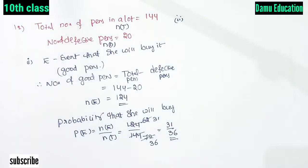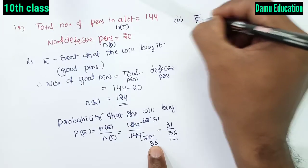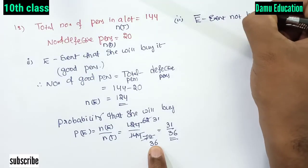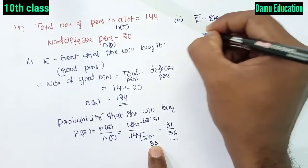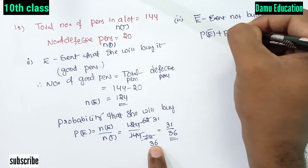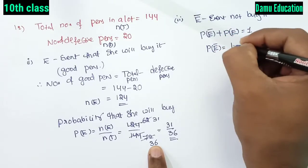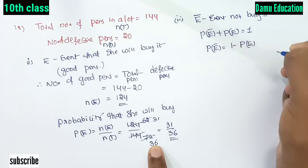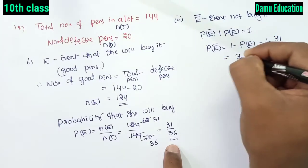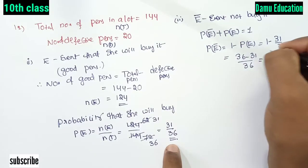She will not buy it. Let's take P(E not). The probability of not buying: probability of E-not plus probability of buying equals 1. So probability that she will not buy is 1 minus P(E) equals 1 minus 31 by 36. Taking LCM: 36 minus 31 by 36 — we get 5 by 36.